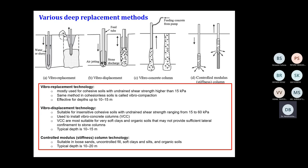There are different varieties of stone columns that you may come across when you refer to any book. The stone column techniques shown here include vibro replacement, vibro displacement, vibro concrete column, and controlled modulus stiffness column, and so forth. All these techniques fall under the category of stone columns; however, the kind of material used for construction of the stone column is different.